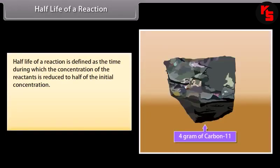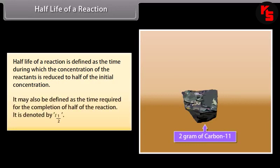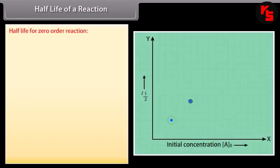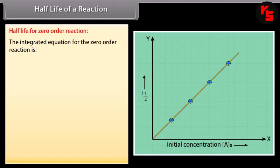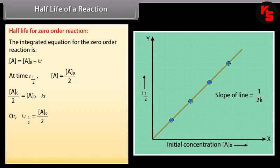Half-life of a reaction is defined as the time during which the concentration of the reactants is reduced to half of the initial concentration; it may also be defined as the time required for the completion of half of the reaction; it is denoted by t½. For zero-order reaction, the integrated equation is A = A₀ − KT. At t½, A = A₀/2, so A₀/2 = A₀ − Kt½, giving Kt½ = A₀/2, therefore t½ = A₀/2K.